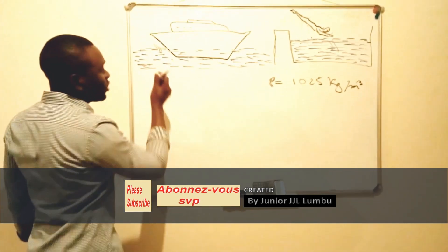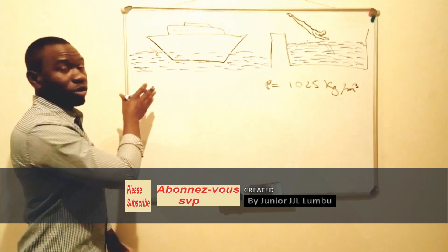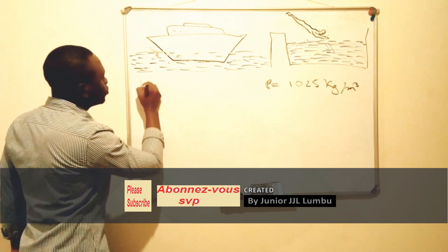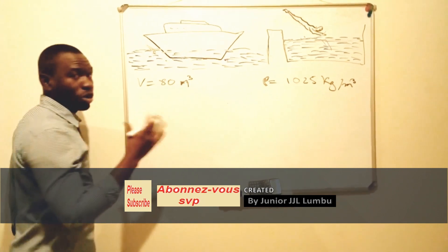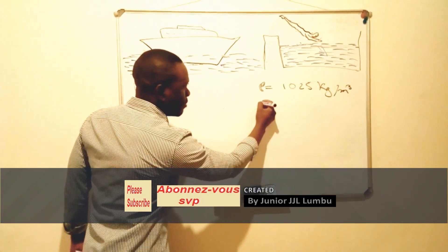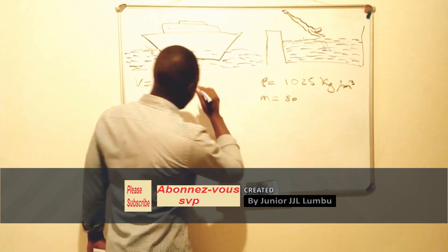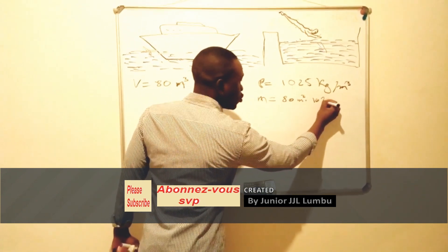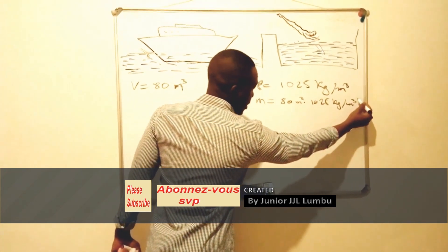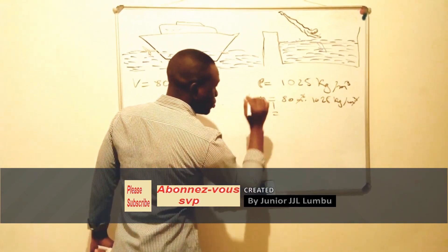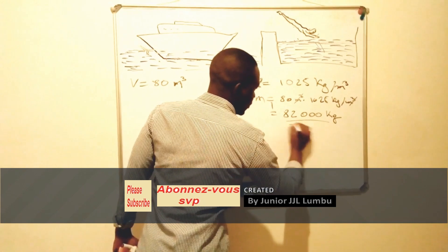We realize that this boat, once it finds itself in the water or in the sea, displaced a volume of 80 cubic meters of water. This means that the mass being displaced by our boat is equal to 80 cubic meters multiplied by 1025 kilograms per cubic meter, and that equals 82,000 kilograms.